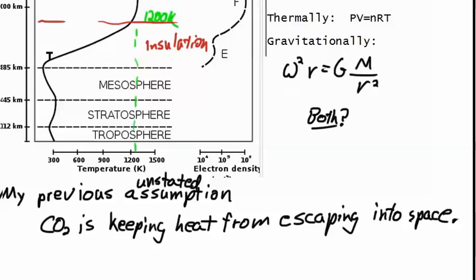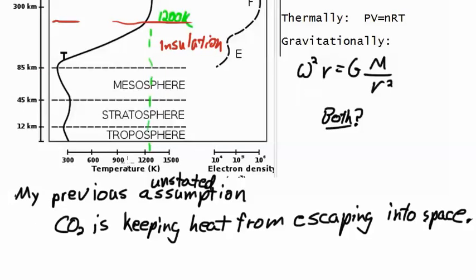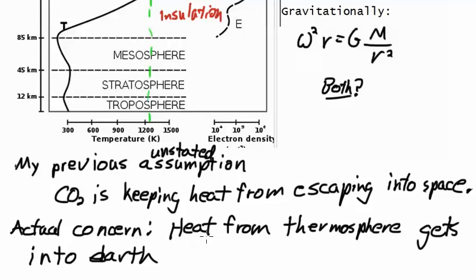Now, that kind of reveals an overall misconception in my own concept of how things work, because in my previous unstated assumption about all this, the carbon dioxide is keeping heat from escaping into space. This kind of changes that around quite a bit, because it looks like the worry isn't that heat escapes into space, but rather that the heat from the thermosphere escapes into the atmosphere.